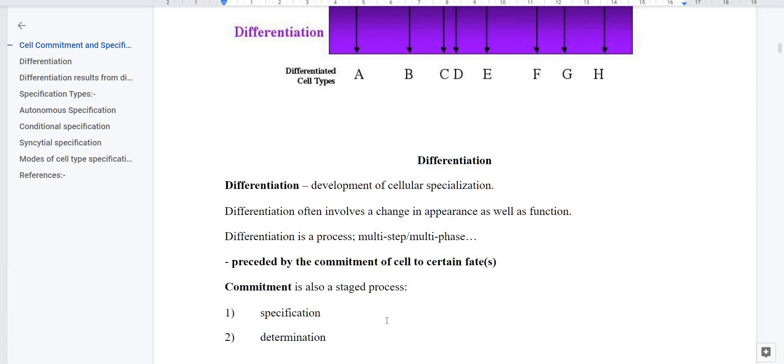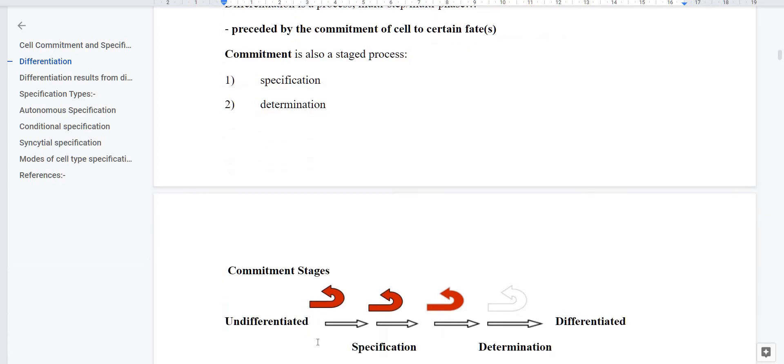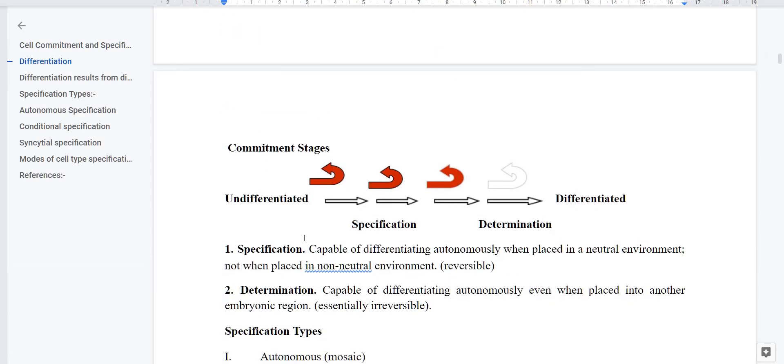What is specification and determination? In commitment, there is an undifferentiated cell. It has committed that I want to make RBC. So the first step will be specification, then determination, then differentiation. Now what is specification? Which we have told students, that it can revert back. The complete definition, if we look at specification, it is capable of differentiating autonomously when placed in a neutral environment, not when placed in a non-neutral environment.